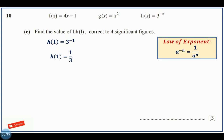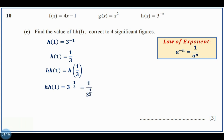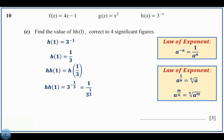Since we have h(h(1)), I put this h(1) inside another h. So h(h(1)) = h(1/3). Therefore, I change x with 1 over 3, giving 3 to the power of negative 1/3. Bringing it down to make the index positive: 1 over 3 to the power of 1/3. By the law of exponents, a to the power of 1/n equals the nth root of a. So this becomes 1 over the cube root of 3.